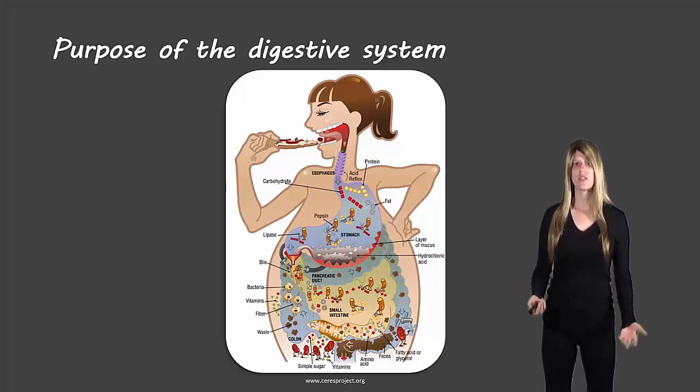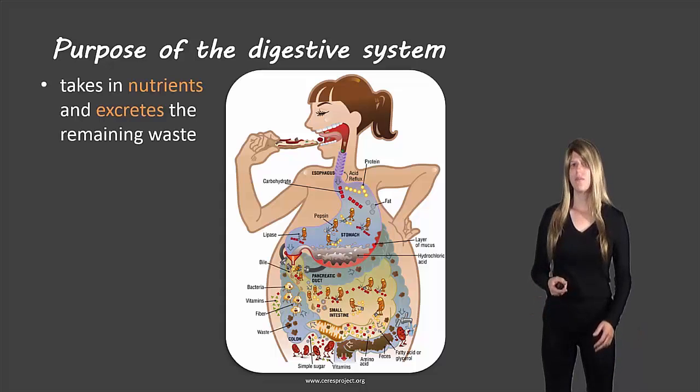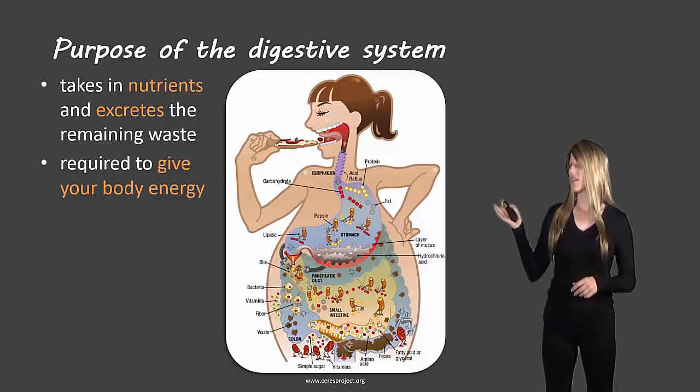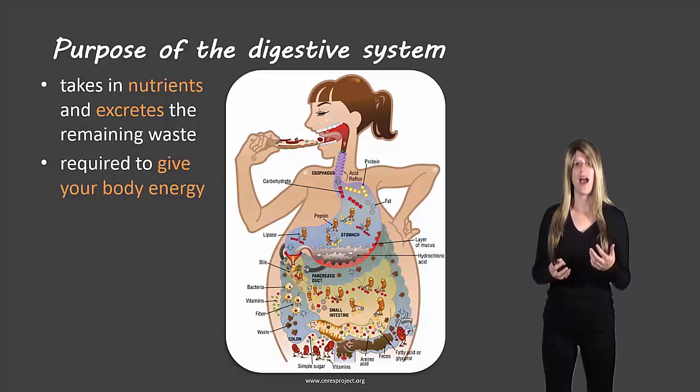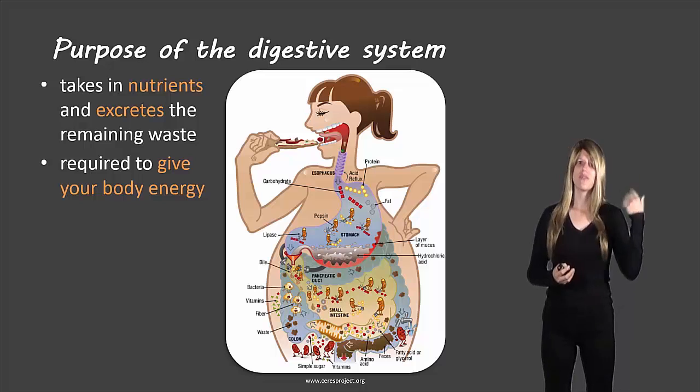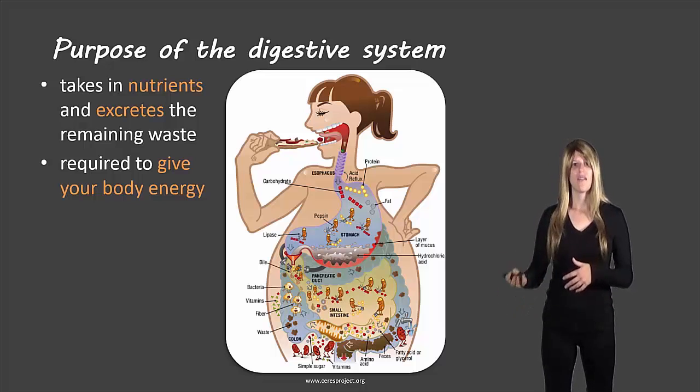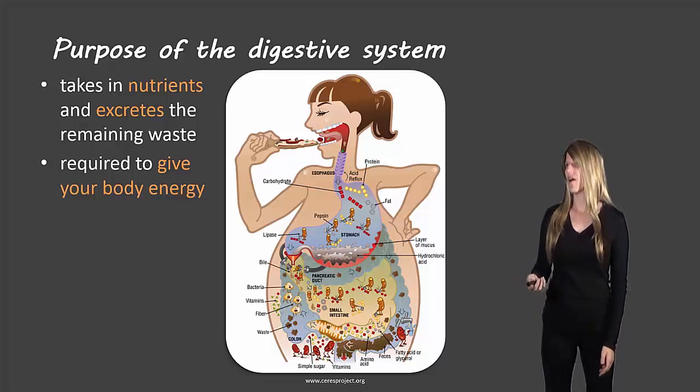So first of all, what's the purpose or what's the role of the digestive system? Well, it takes in nutrients and excretes or gets rid of the remaining waste, and that's required to give your body energy. You can see in this picture here there's a whole lot of details about what happens with the different enzymes digesting different types of foods. We're not going to learn about that in this course, but if you take biology next year you'll learn all about the different specific enzymes and what they break down, and how protein is broken down versus fats or versus carbohydrates and so on.